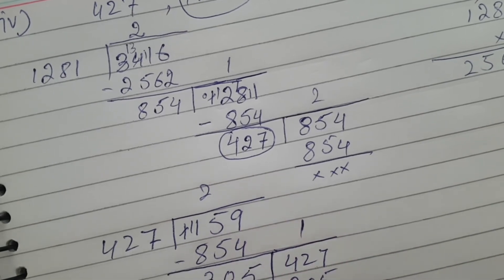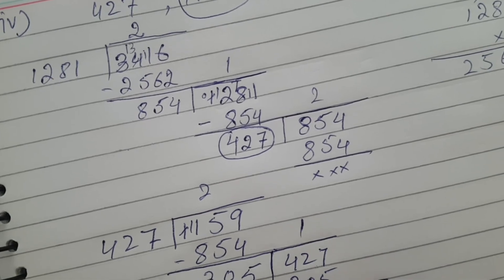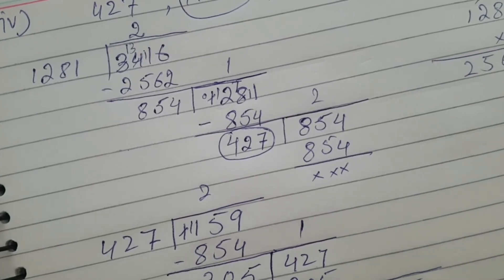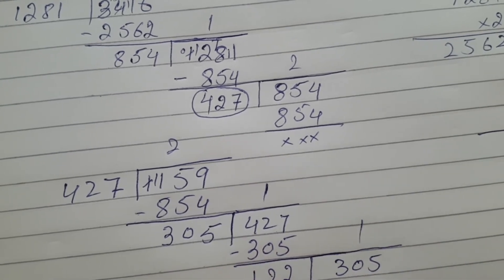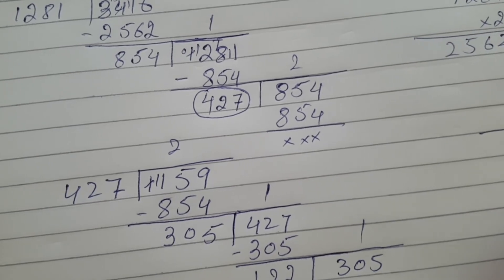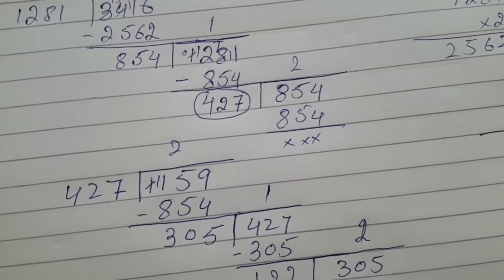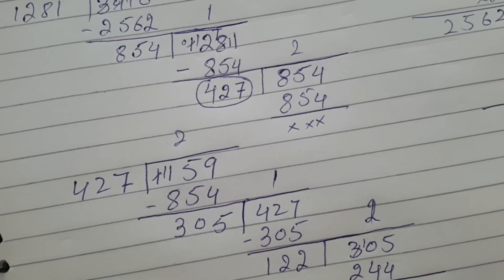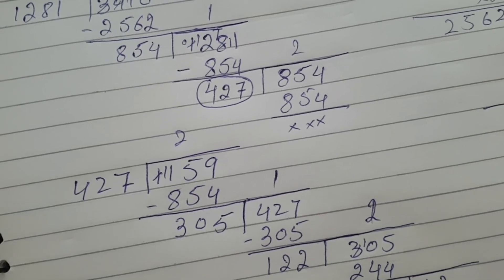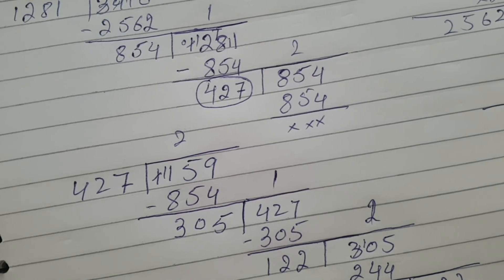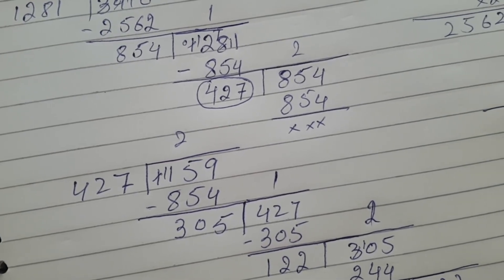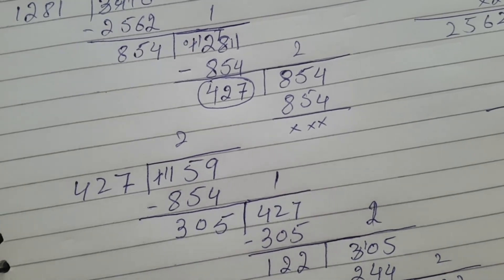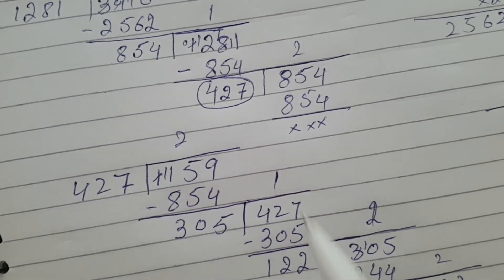427 divided by 305: one times is 305. Subtraction gives: 7 minus 5 is 2, 2 minus 0 is 2, 4 minus 3 is 1 — remainder is 122. Now 122 is the divisor and 305 is the dividend. 122 two times is 244; 305 minus 244: 5 minus 4 is 1, 10 minus 4 is 6 — remainder is 61.